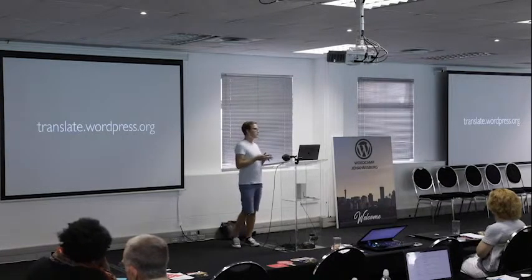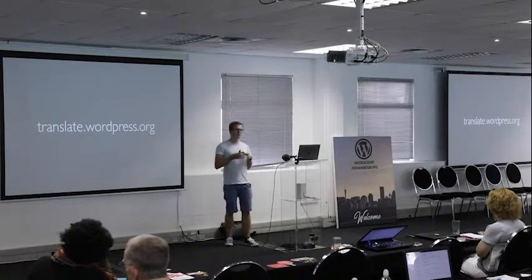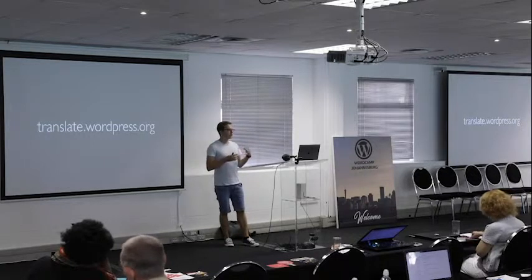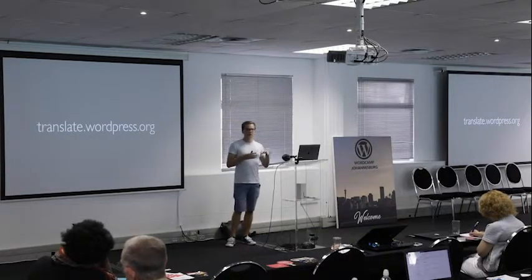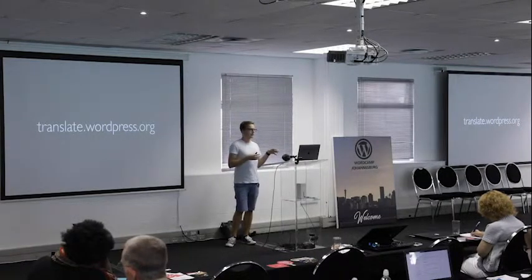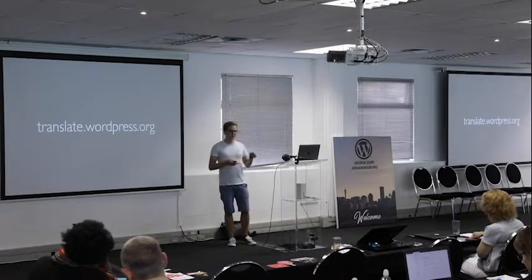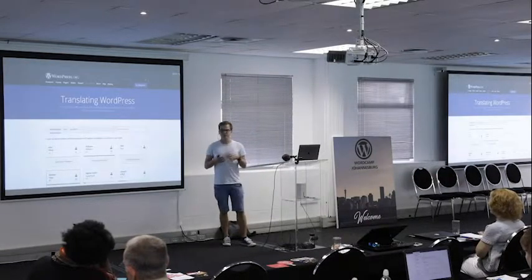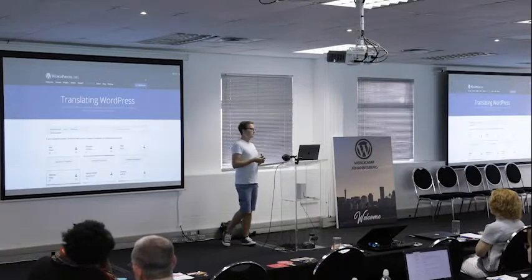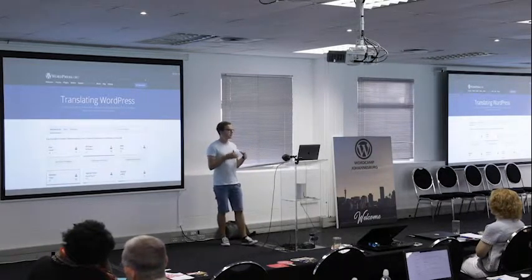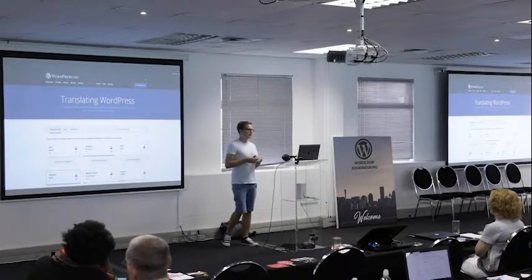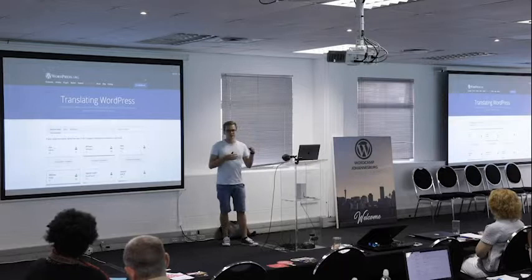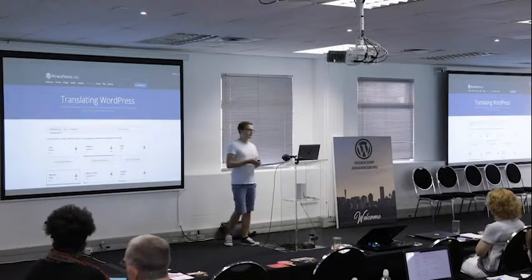One big accelerator for global adoption was the translation platform made available at translate.wordpress.org. This platform allows thousands of people to fully localize their projects — not just WordPress itself, but also all the plugins and themes available on WordPress.org, and even the WordPress mobile apps. The site is built on an open source WordPress plugin called GlotPress, which allows setting up multiple projects and translating them to almost 180 different locales. A locale is not just a language, but also a language with variants — for example, in German there's a formal and an informal variant.